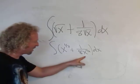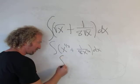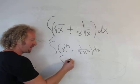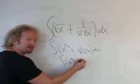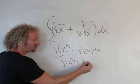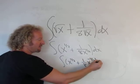So now what we do is we have to bring this upstairs. So this is going to be integral x to the 1 half plus, I'm going to write it like this, 1/8 x to the negative 1 half, dx.